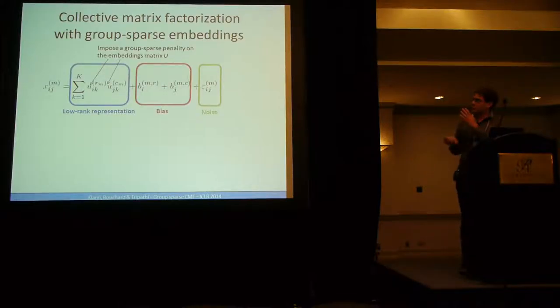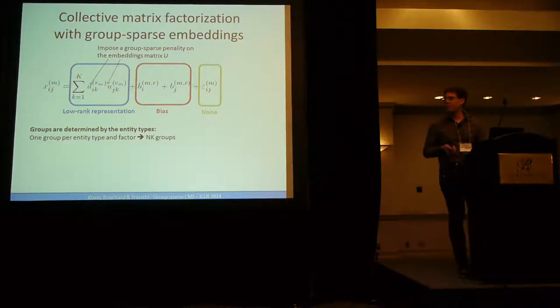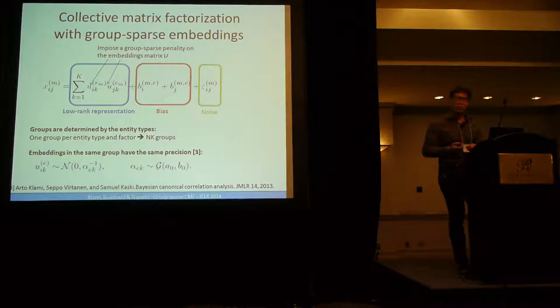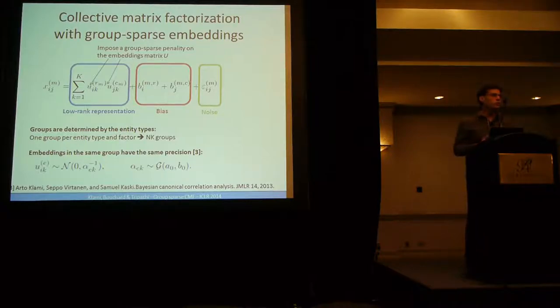So this is where group-sparse embedding comes into play. What we'll assume is exactly the same model. But instead of having Gaussian prior for the embedding, we'll try to group the embedding by type. So for all entities of the same type, we'll try to group them together to be zero together, if it's possible. In a Bayesian framework, we could do structured sparsity, like group sparse l1, l2 penalty. Here we choose the Bayesian framework because it's just simpler to understand.